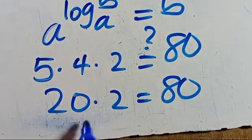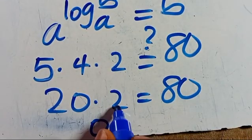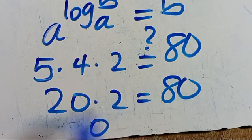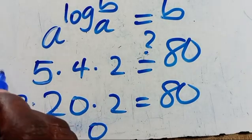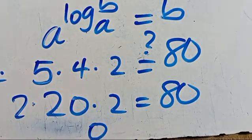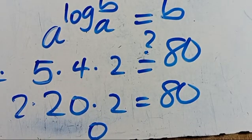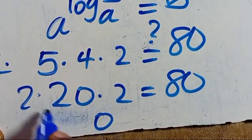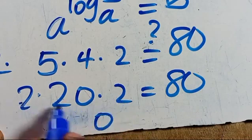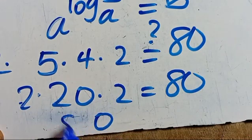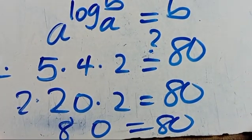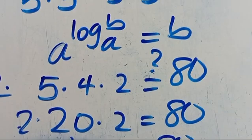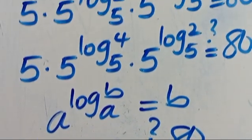So 5 times 4 is 20, times 2 equals 40. And since we have 2 times 40, that gives us 80, which equals 80. This confirms our answer is correct. If you are new and find this video interesting, don't forget to share, like, comment and subscribe to our YouTube channel for more math tutorial videos.